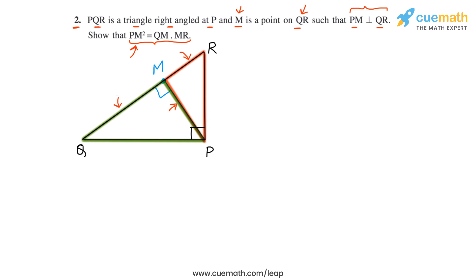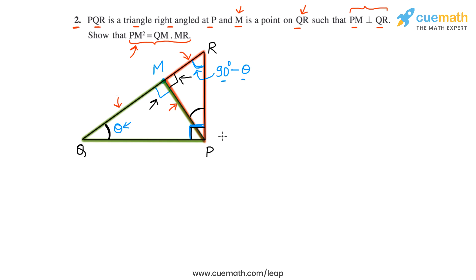To show these two triangles are similar, we compare corresponding angles. The angle at M in triangle PMQ equals the angle at M in triangle RMP, because both are 90 degrees. Also, the angle at Q equals the angle at P in triangle RMP. To see why: if the angle at Q is theta, then since angle P in triangle PQR is 90°, the angle at R must be 90° − theta by the angle sum property.